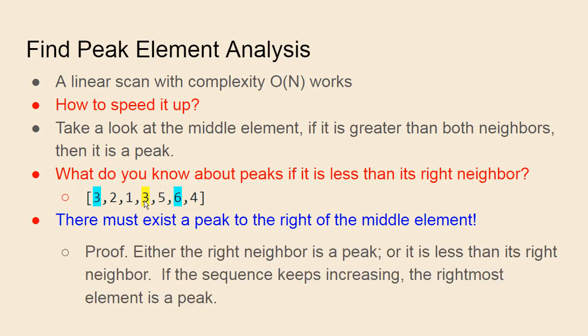If this middle element is less than the element to the right, either the element on the right is a peak, or if it's not the peak, it's already greater than the element to the left, so it must be less than the element to the right. So then we look at that.